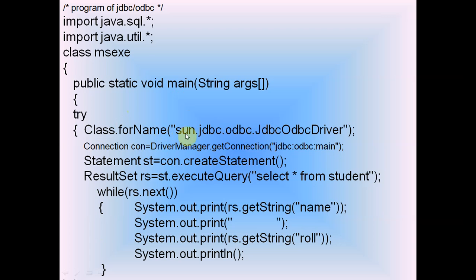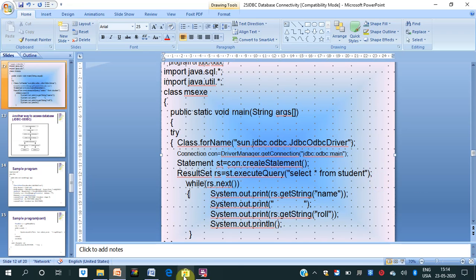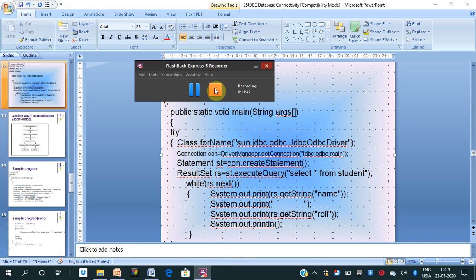You need to look up which driver is required for your specific database — for Oracle, find the Oracle driver; for SQL Server, search accordingly. The connection string follows the pattern jdbc:odbc:DSN_name. I hope you understand how to make database connectivity in Java. Thank you very much.